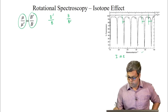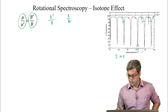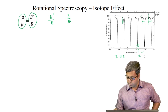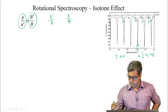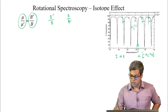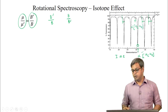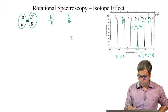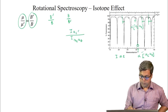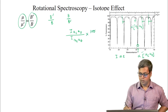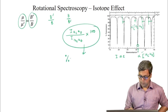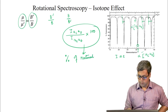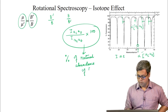Let us consider one of these peaks. The intensity of the main peak is proportional to the concentration of ¹²C¹⁶O. On the other hand, the intensity of the smaller peak is proportional to the concentration of ¹³C¹⁶O. If we take the ratio of the intensity from ¹³C to ¹²C and multiply by 100, what we get is the percentage of natural abundance of ¹³C.